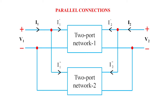Here we have network one and network two connected in parallel. Input voltage V1 and output voltage V2 are connected to two-port network one and two-port network two. Input current I1 enters a shared node and splits into I1-dash going into network one and I1-double-dash going into network two. By KCL, I1 equals I1-dash plus I1-double-dash, and similarly I2 equals I2-dash plus I2-double-dash. The parallel voltages are V1 and V2.